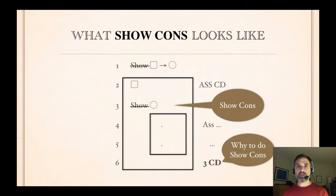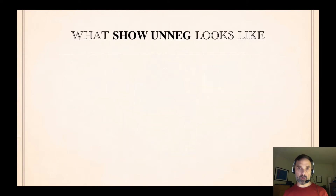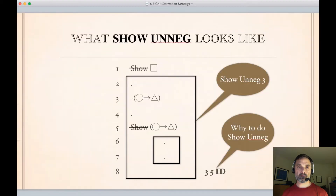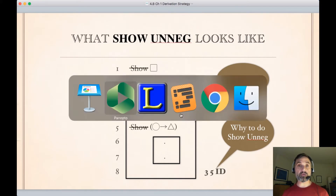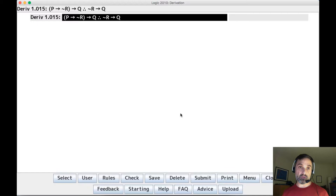The second strategy is show unnegation. We've already seen show unnegation in action, but we're going to do a couple of sample derivations that involve it. Here's our first one.